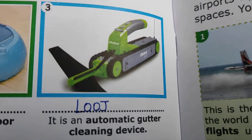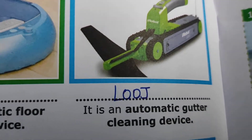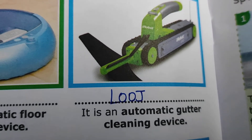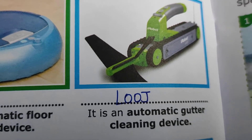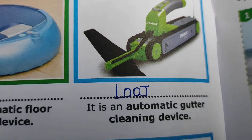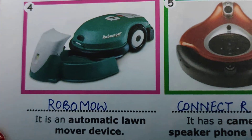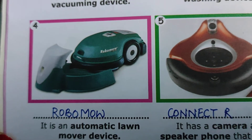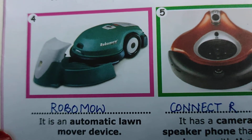The third one is an automatic gutter cleaning device. When gutters get choked, a lot of garbage gathers in them, so to clean gutters we use a robot machine which is named Luge. The next is an automatic lawnmower device — a device which is used to cut the grass in the lawn.